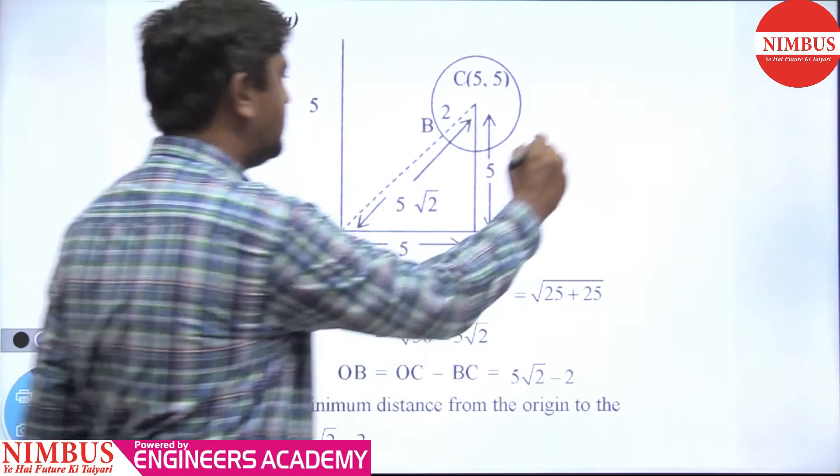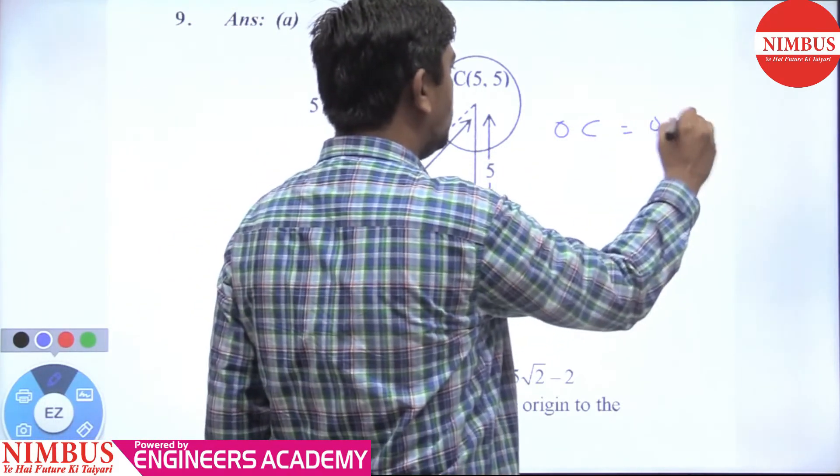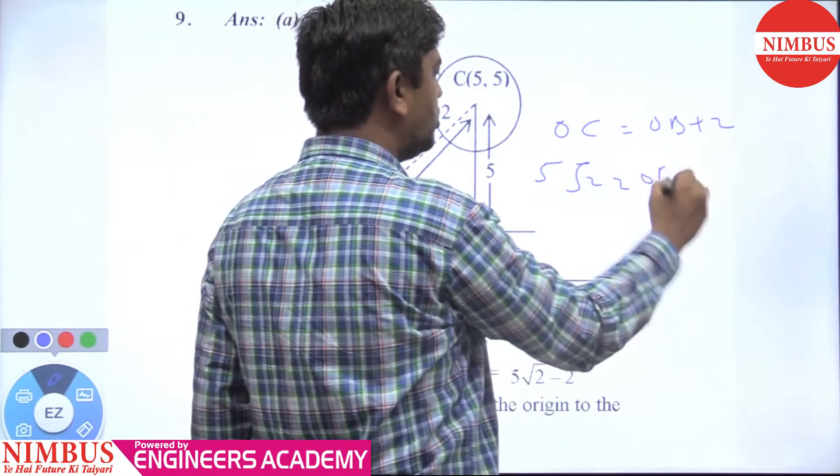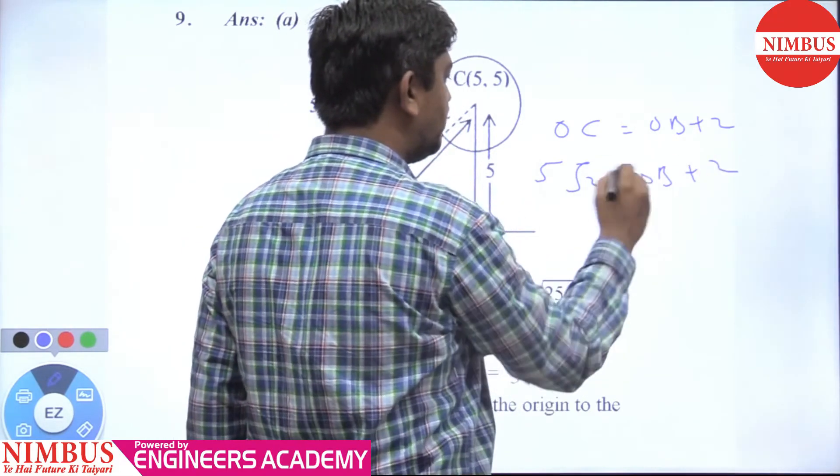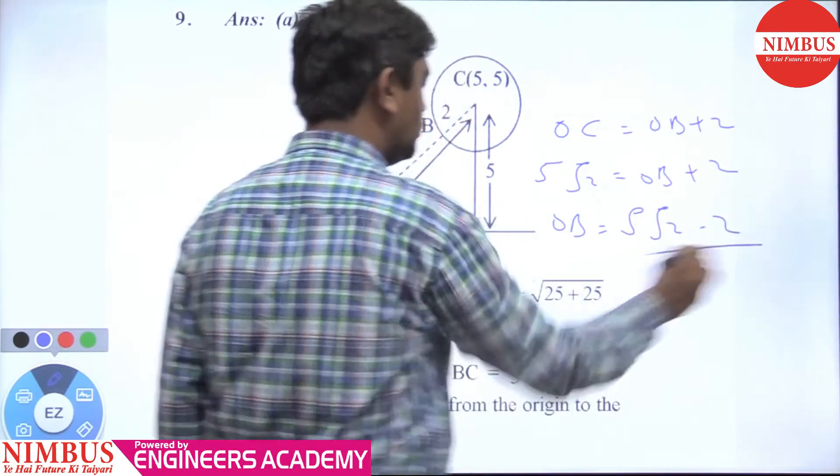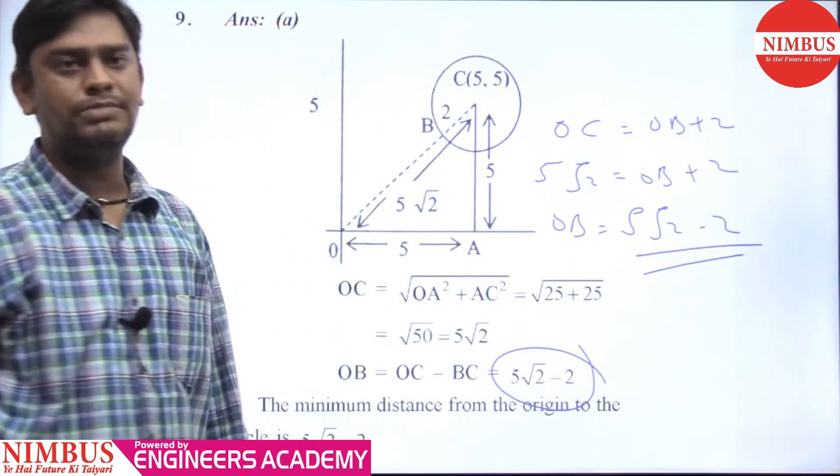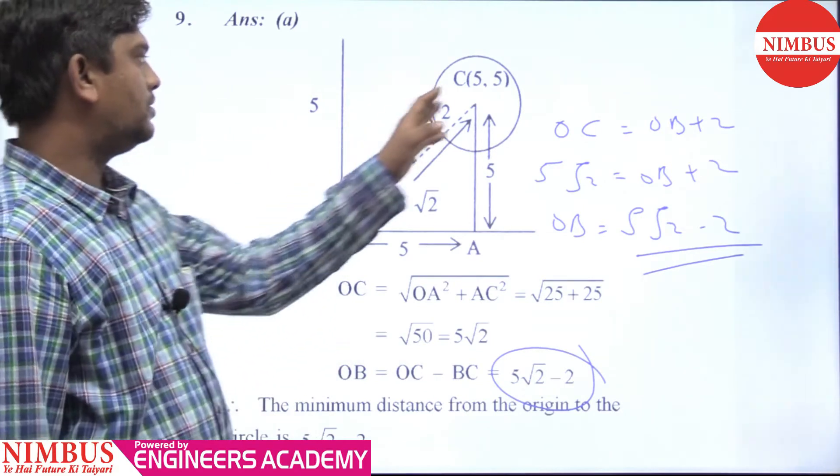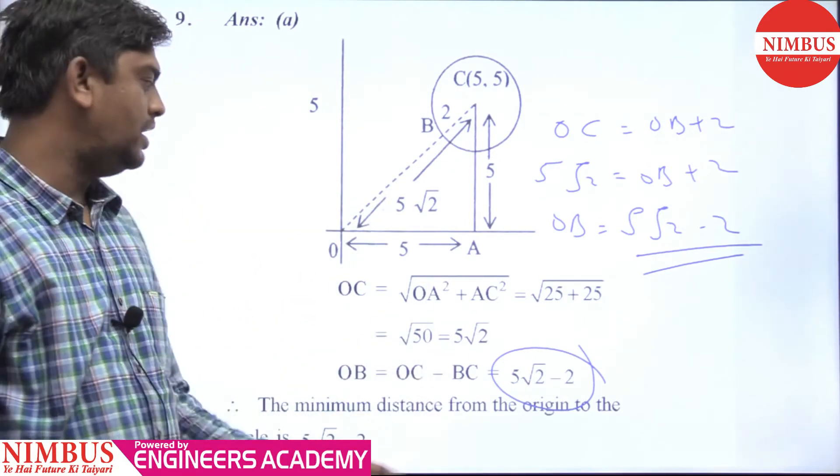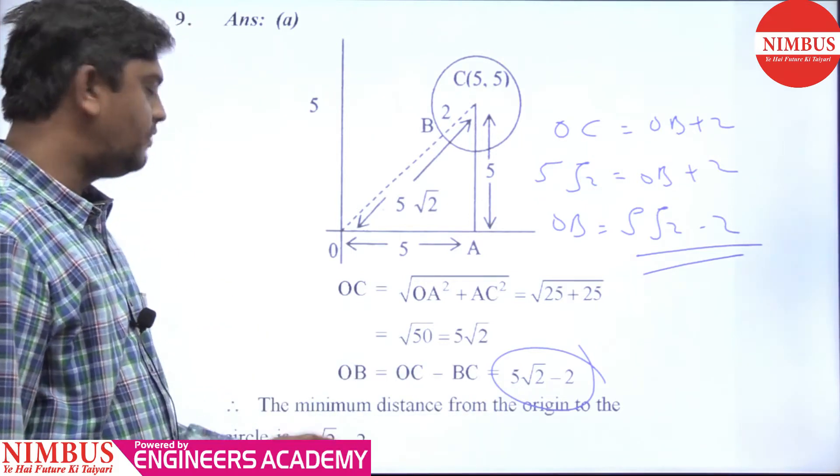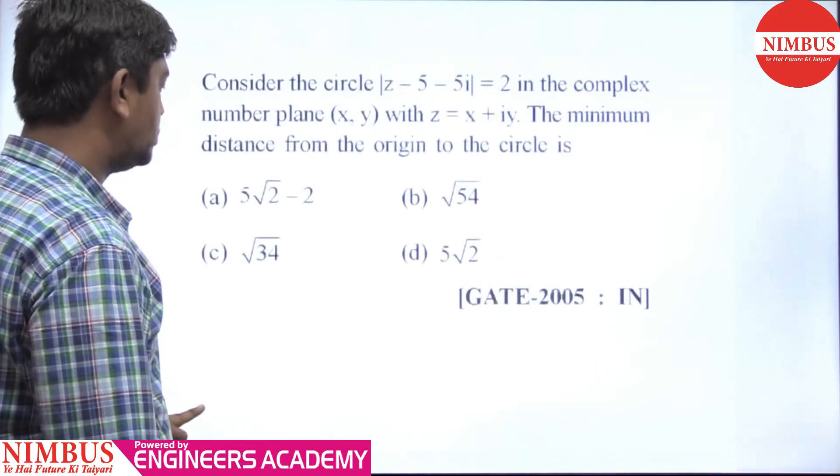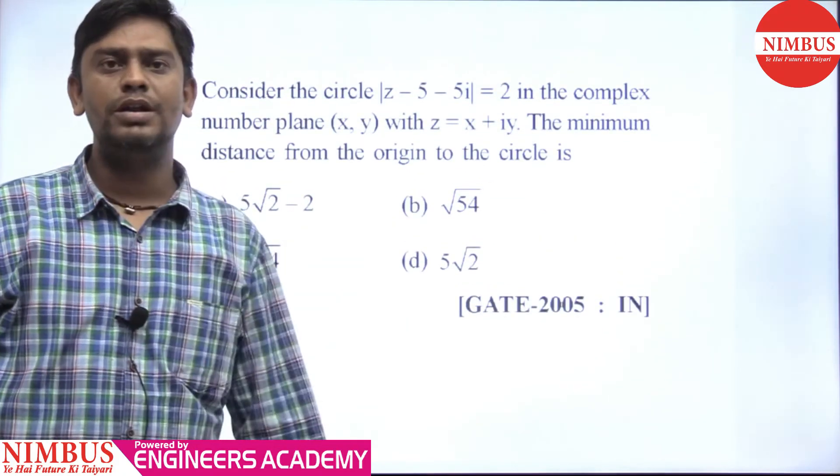What happens if I remove 2 from here? Then it will be 5√2 - 2, which is written here. The minimum distance of the circle at any point from the origin is nothing but 5√2 - 2. So this is option number A. This question's correct answer is option number A. Thank you.